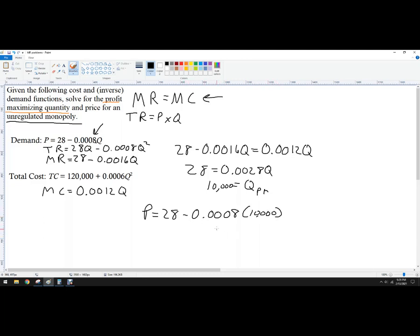And I get 28 minus 8. And that's just 20. So the profit maximizing price is 20, profit maximizing quantity is 10,000 units.